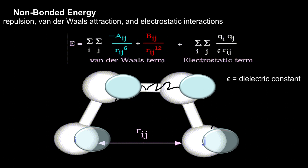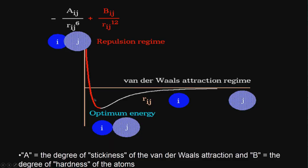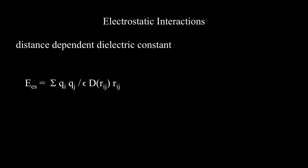The van der Waals potential shows attraction when atoms are far away and repulsion when they come very close — hence the 2 terms. A is called the degree of stickiness and B is called the degree of hardness.